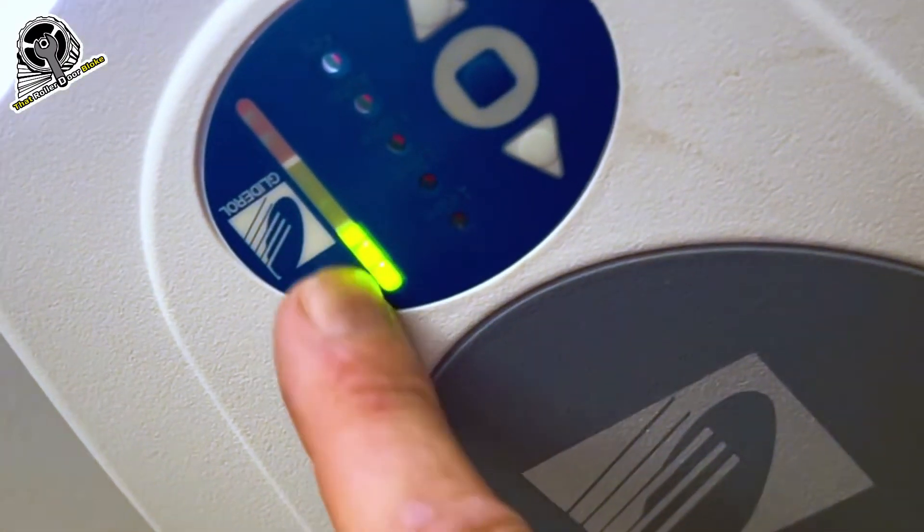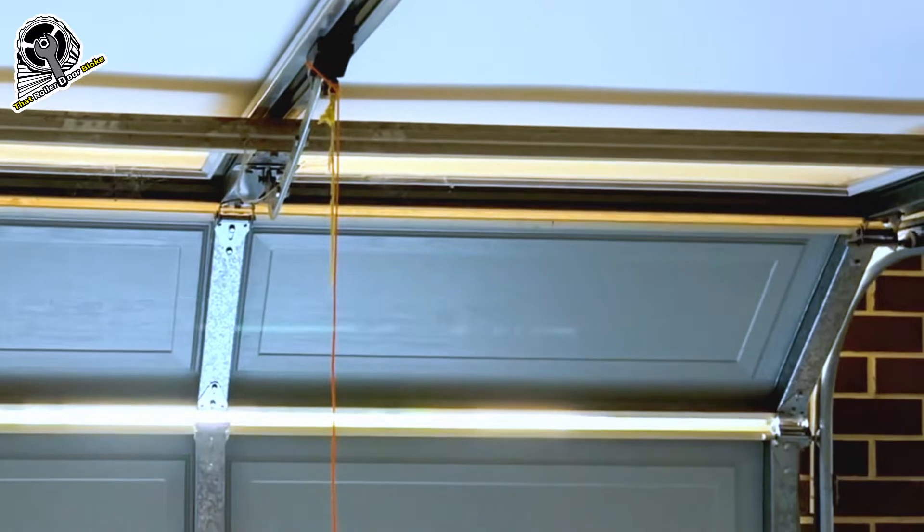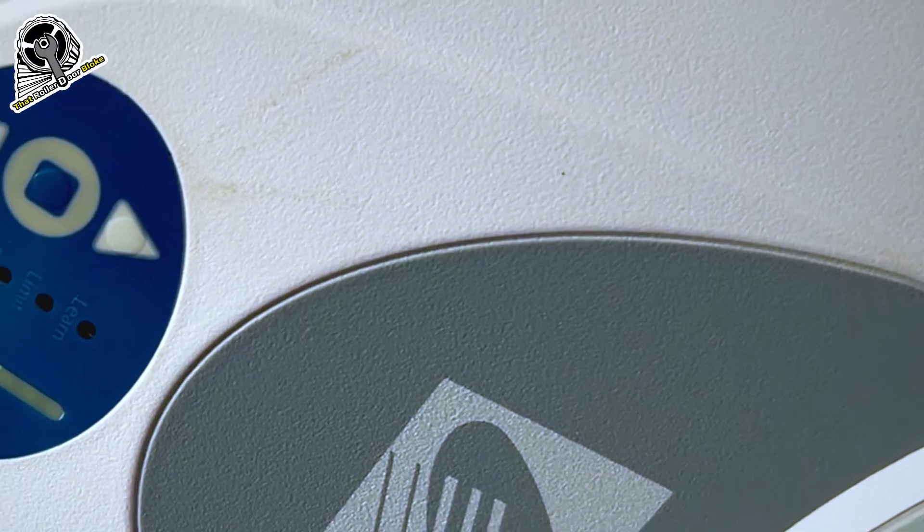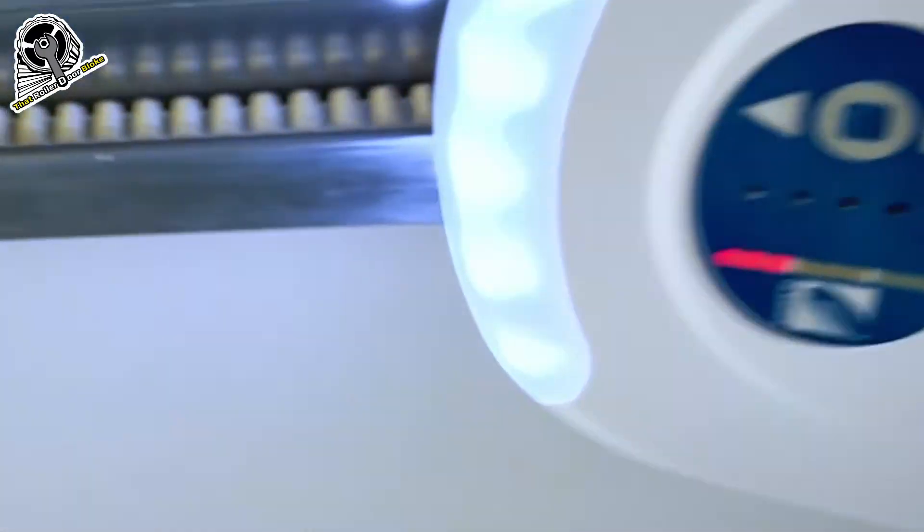And now the door will light up the green bank of LEDs and start to open all by itself. So it's going to do an open and closed calibration cycle, which sets the force on the automatic reverse system. Now the door will go down by itself.